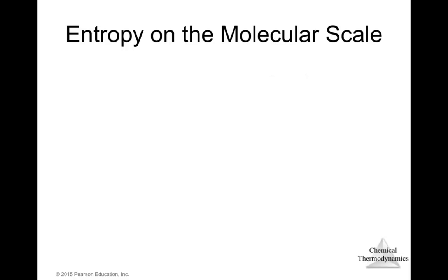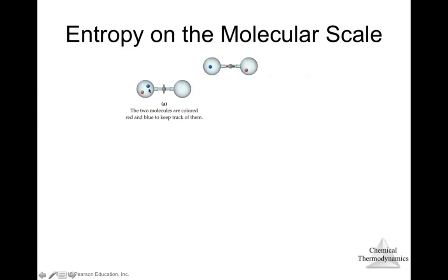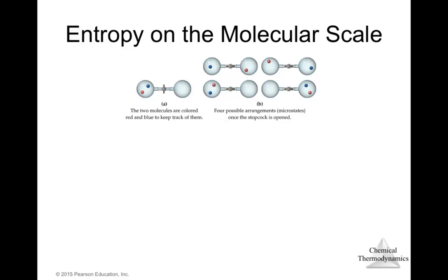Now let's examine entropy at the molecular scale. Consider two gas molecules in a left vessel. When the partition is opened, the possible arrangements are: blue stays left and red goes right; red stays left and blue goes right; both stay left; or both go right. These four possible arrangements are called microstates.